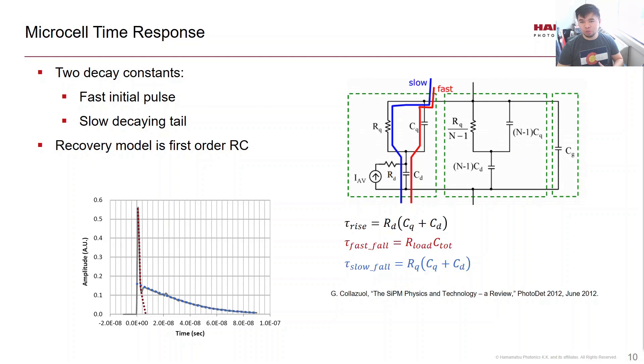The microcell recovery is modeled as a first-order RC circuit, which is fairly simple to implement in native Julia.